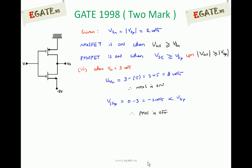Case 3: when V input is 3 volts, Vgs_N = 3 − (−5) = 8 volts, so N-MOS is on. Vsg_P = 0 − 3 = minus 3 volts, which is less than |Vtp|, so P-MOS is off. If we increase V input further to more positive values, the same situation holds — N-MOS is on and P-MOS is off.